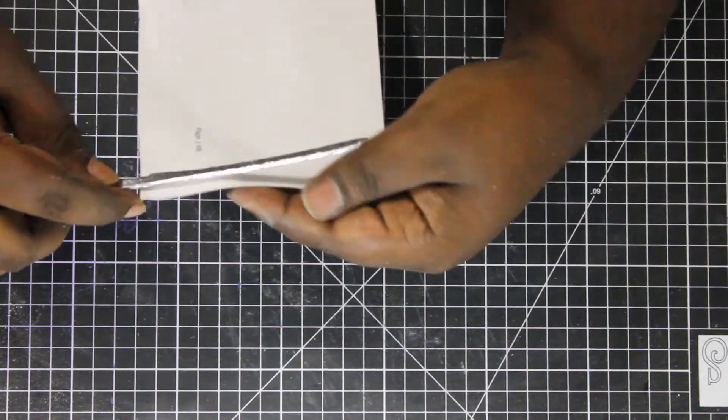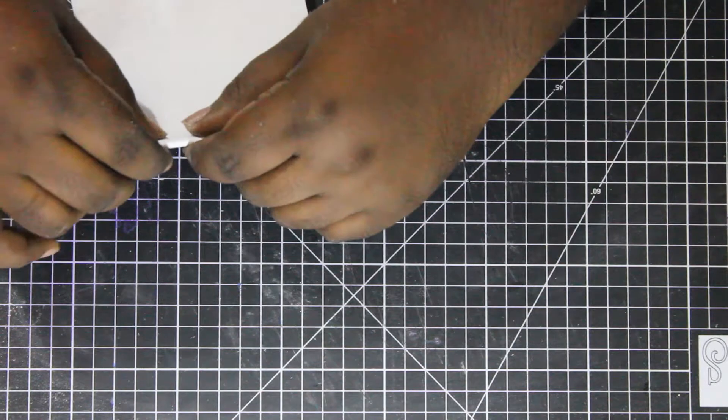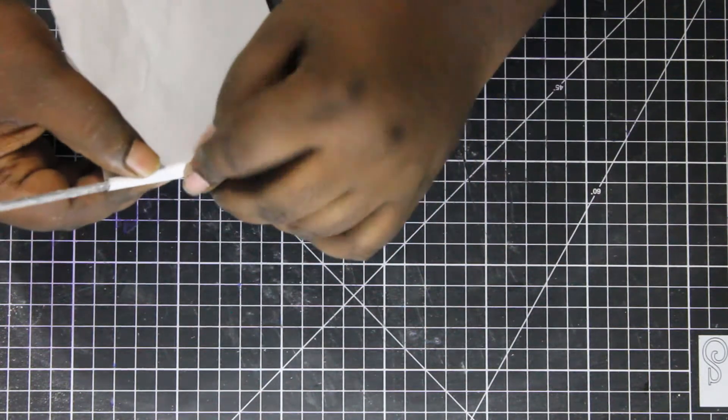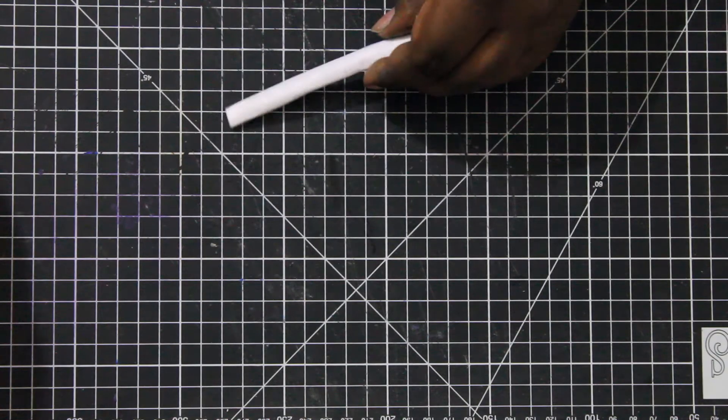Now I am going to make the scabbard. Take a piece of paper and wrap the blade loosely so that the blade can move in and out easily. Apply craft glue to hold it together.